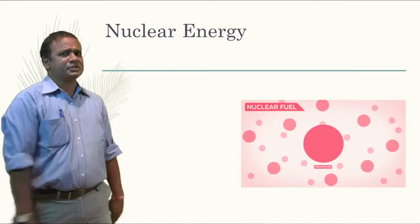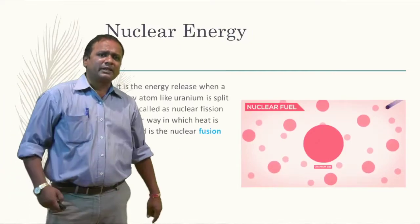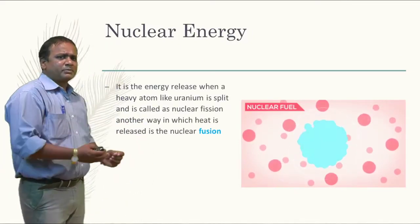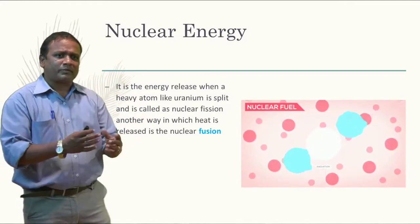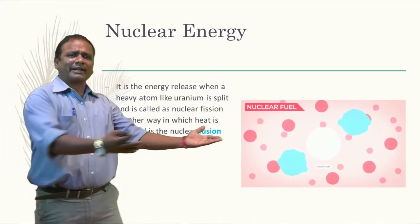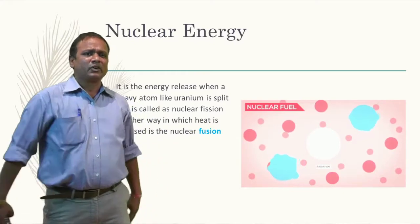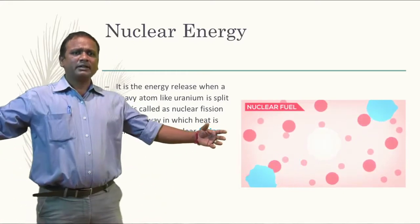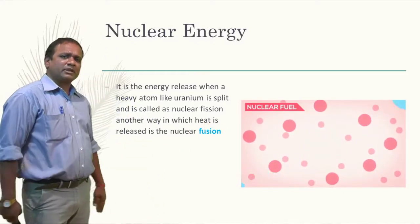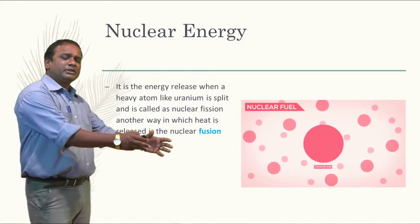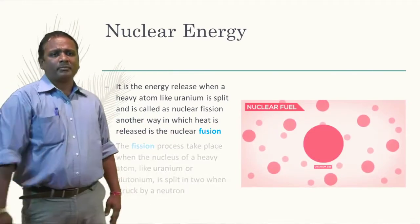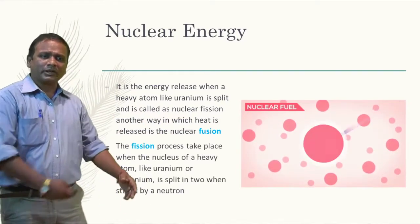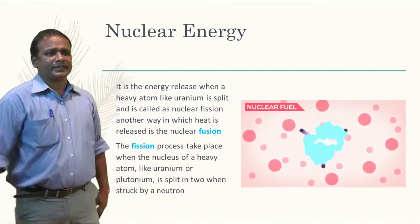Now, how this nuclear energy has been developed? When an energy is being released by breaking up a system like an atom, like uranium, when it has been split, an enormous amount of heat energy has been liberated. That heat has been used in order to develop the power, in order to develop electricity.